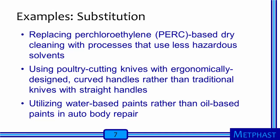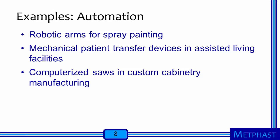Whereas elimination gets rid of a hazardous process or agent entirely, substitution requires an engineering solution to replace the process or agent with something else. One example is replacing perchloroethylene- or PERC-based dry cleaning with processes that use less hazardous solvents. Other examples include using poultry cutting knives with ergonomically designed curved handles to prevent musculoskeletal disorders, and utilizing water-based paints rather than oil-based paints in auto body repair to avoid solvent exposures. Examples of automation include robotic arms for spray painting in automobile factories, and mechanical patient transfer devices in assisted living facilities to move patients without putting staff at risk of lifting injuries.